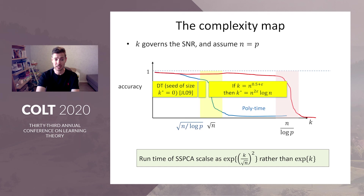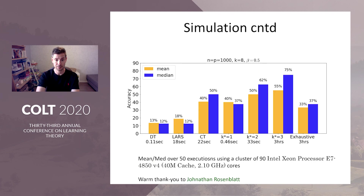To conclude this part: the runtime of SSPCA scales exponentially with K over square root n, squared, which is much better than the exhaustive search, which is exponential in K.